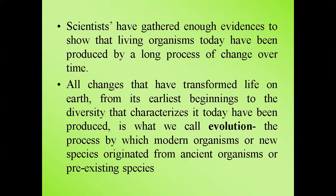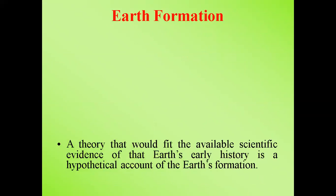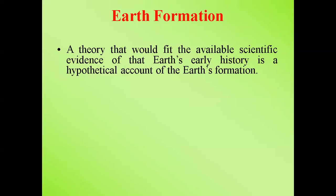Evolution is the process by which modern organisms or new species originated from ancient or pre-existing species. Thinking about how the earth and life formed, our earth's history began with the Big Bang Theory, proposed by Edward Lemaître, where expansion created different elements and matter — from light elements to heavy elements — eventually creating celestial objects, the Milky Way, and our solar system.